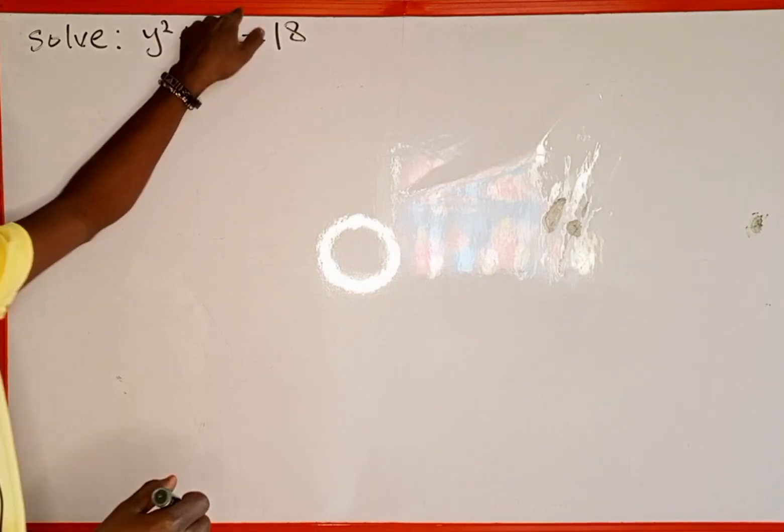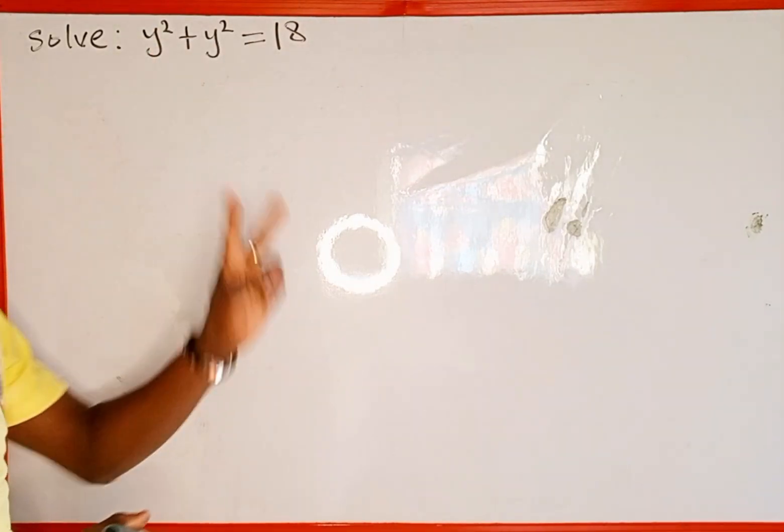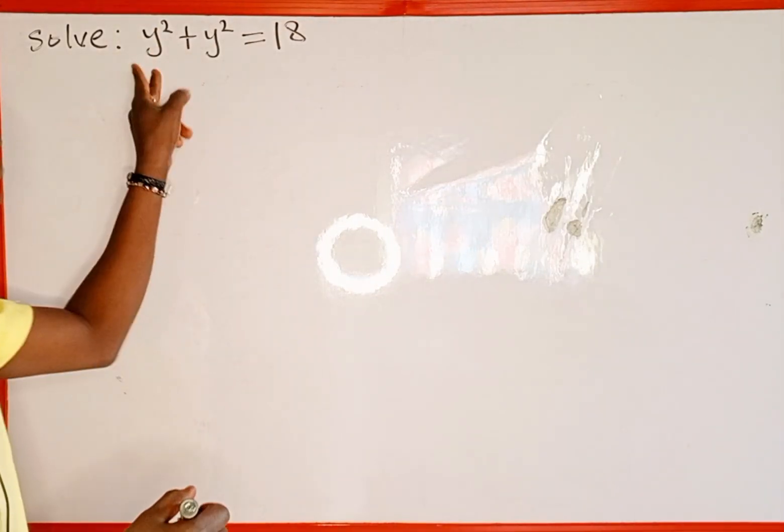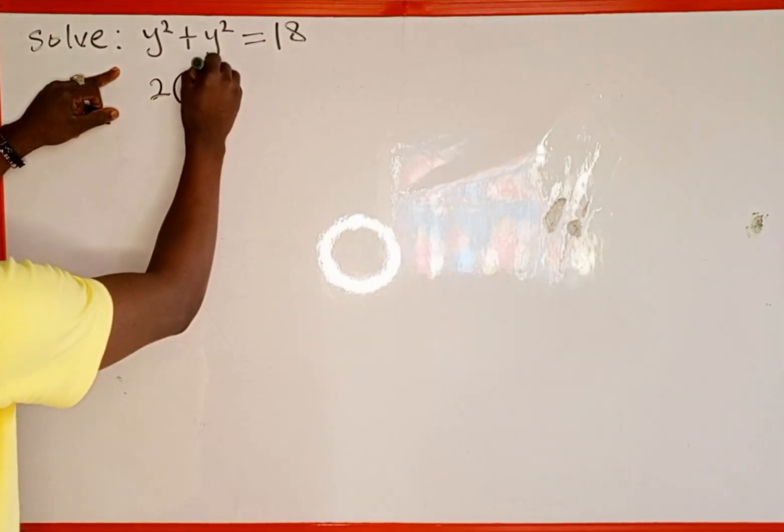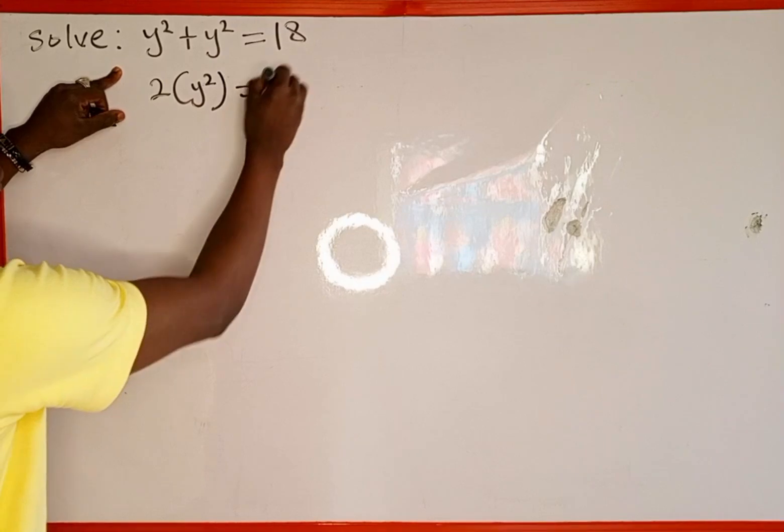y to power 2 plus y to power 2. What do we notice here? We are adding the same thing, and there are 2 of them. So this is going to be 2 of y to the power of 2 which is equal to 18.